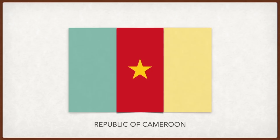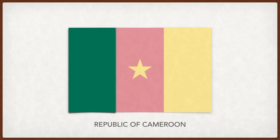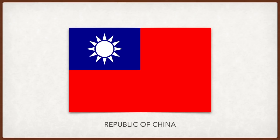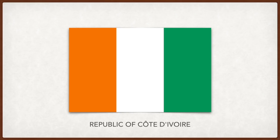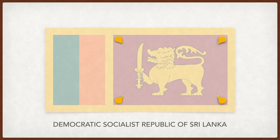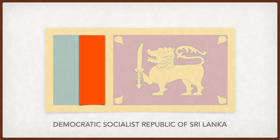Taiwan: blue represents nationalism, white democracy, and red represents the people's livelihood. Ivory Coast: orange is for the land, white is for peace, and green is for hope. Sri Lanka: the lion represents bravery, the four leaves the four Buddhist concepts of kindness, compassion, joy, and equanimity. The saffron stripe represents the Tamil minority, the green stripe the Muslim minority, and the maroon background the majority Sinhalese; the yellow border represents unity.